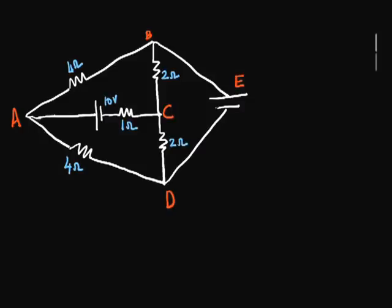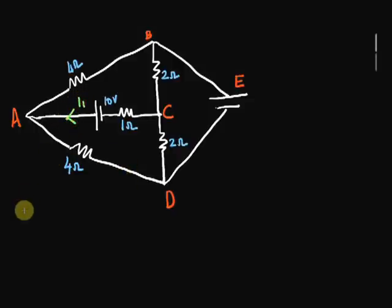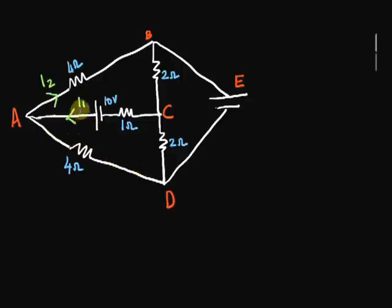So now let's solve this problem by applying these two laws. Take a look at this circuit. What we need to do is calculate the current flowing along every branch of this network. We have a voltage supply of 10 volts which produces a current we'll call I1. At junction A, it splits into two, along AB and AD. We'll call the current through AB as I2, in which case the current along AD will be I1 minus I2.